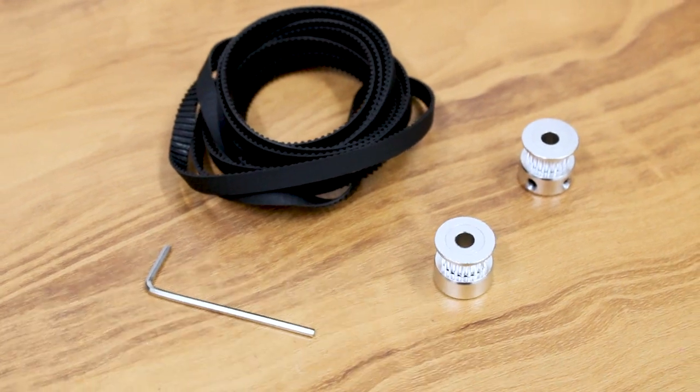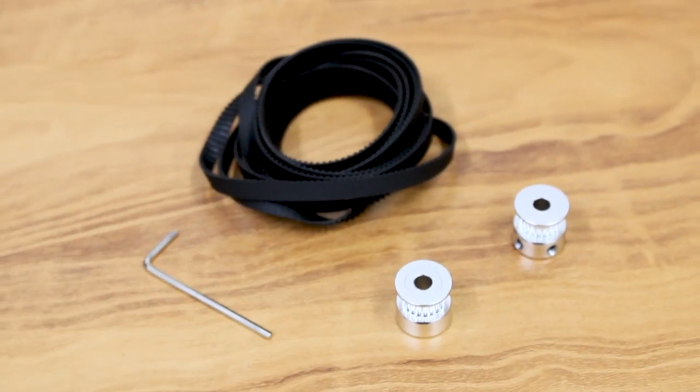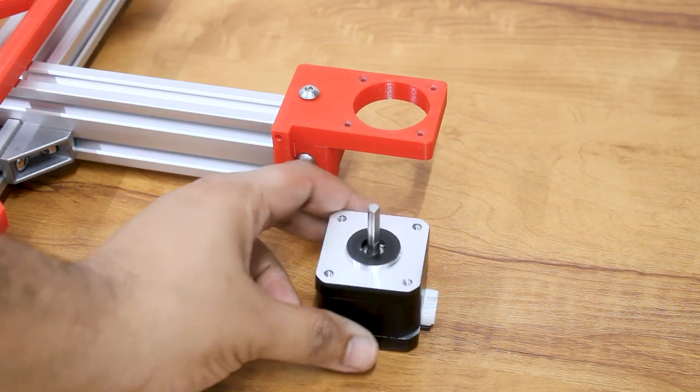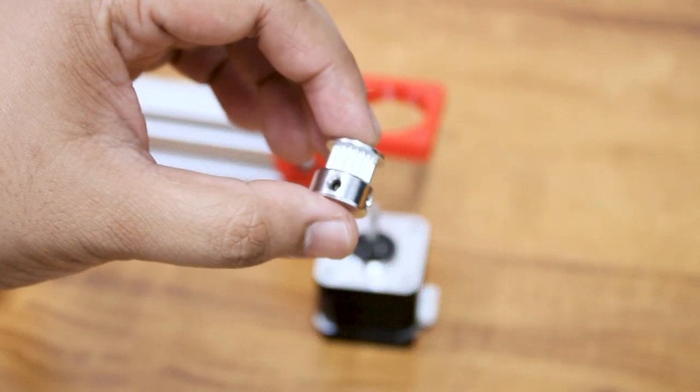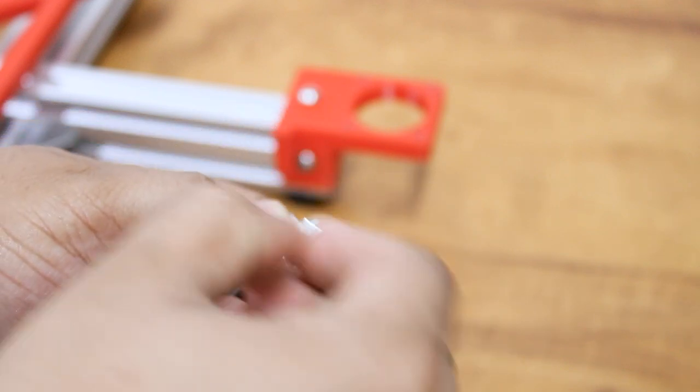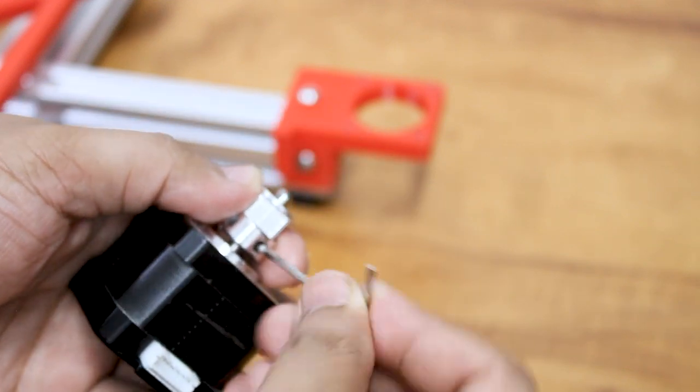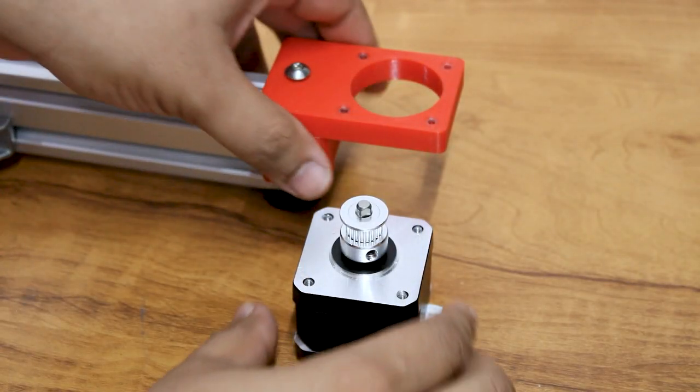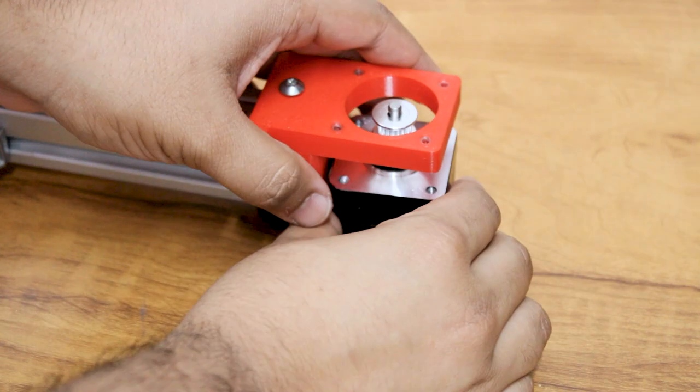Now we will attach the GT2 belt and pulley to the Y-axis carriage. Attach the GT2 pulley on the stepper motor shaft and attach the stepper motor on the backplate with M3 screws.